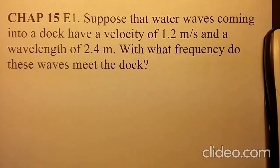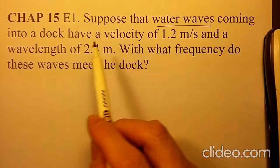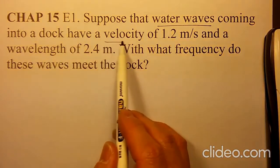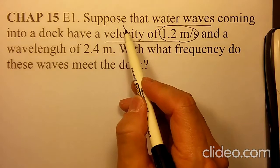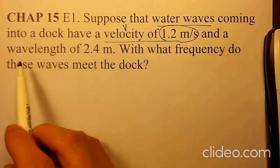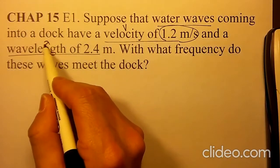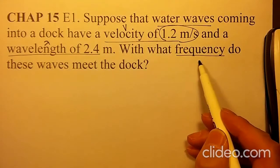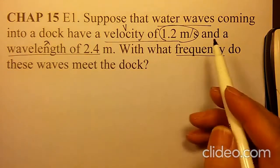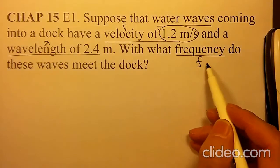Let's solve chapter 15 E1. Suppose that a water wave coming into a dock has a velocity of 1.2 meters per second, V, and a wavelength of 2.4 meters, lambda. What is the frequency of that wave? This frequency is F.